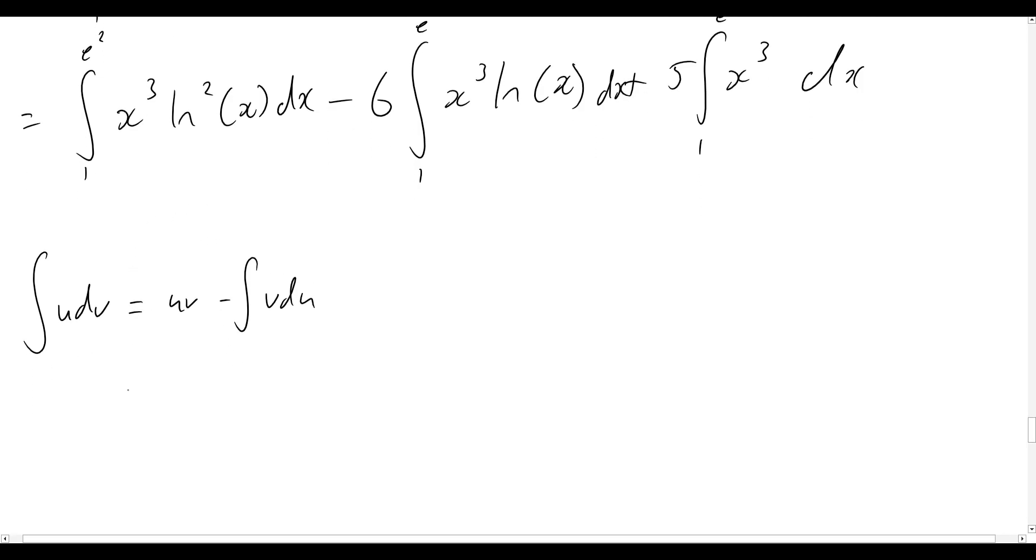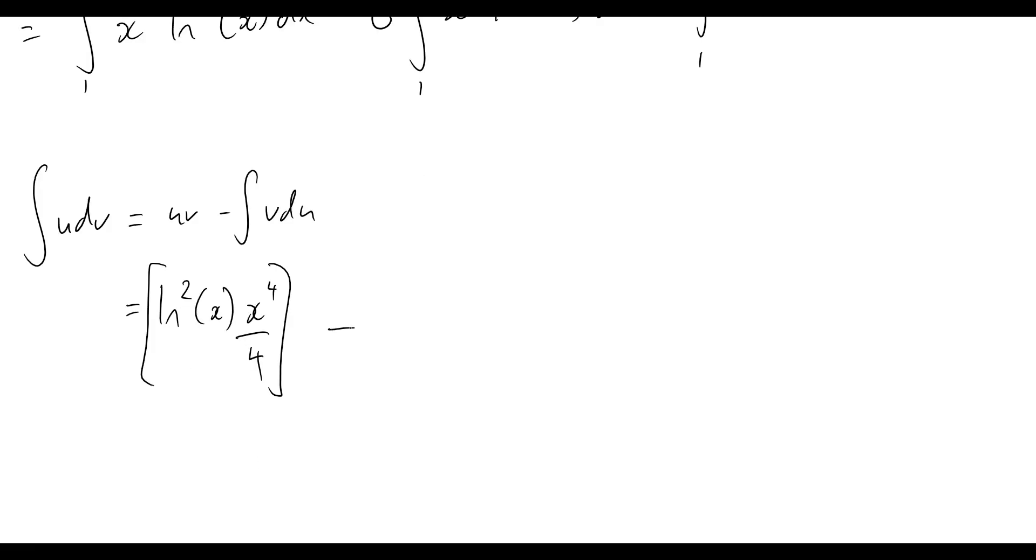We can say that this whole integral here is going to be equal to, well, the logarithmic is the natural log squared of x. V is simply going to be the integral of x cubed, so that's going to be x to the 4 on 4, minus the integral, again, from 1 to e squared.